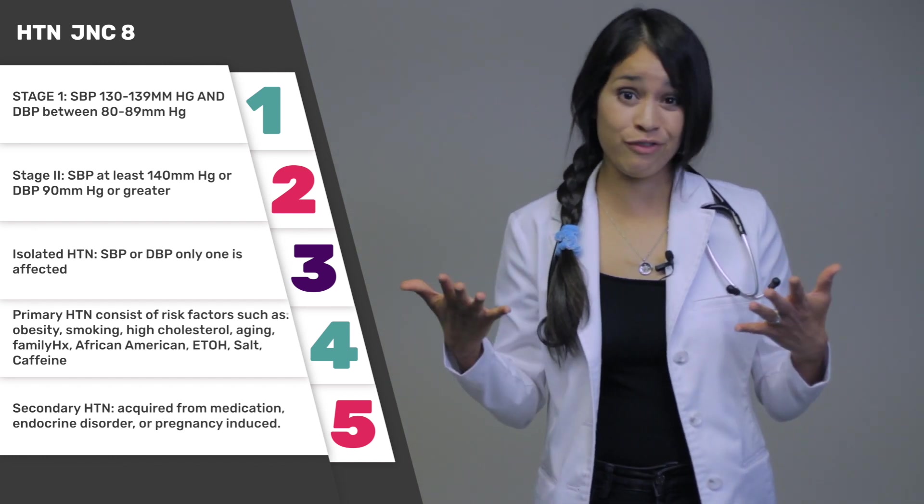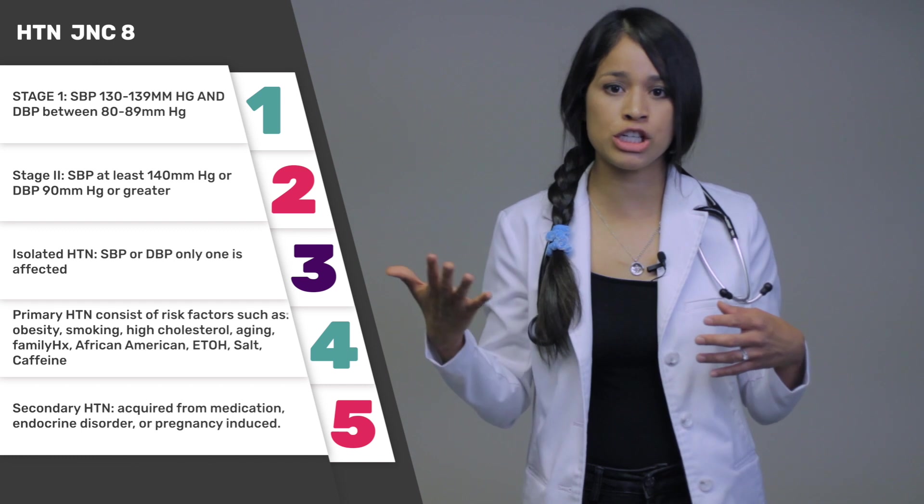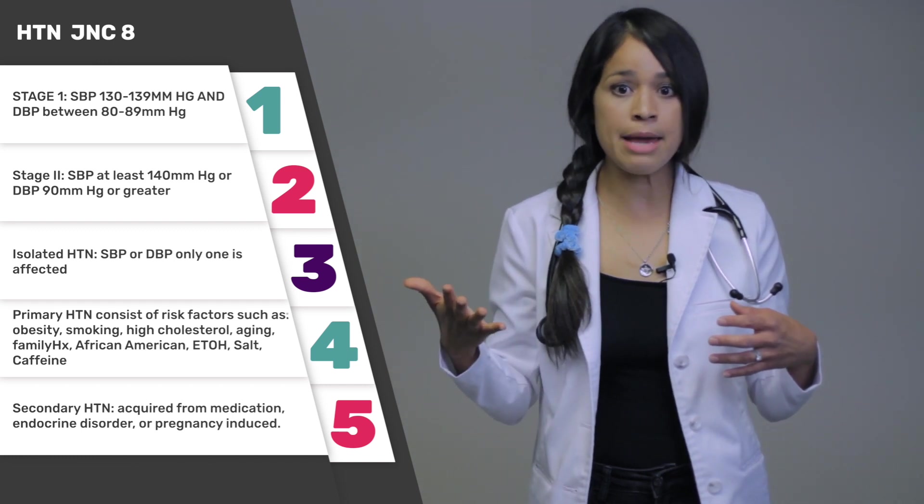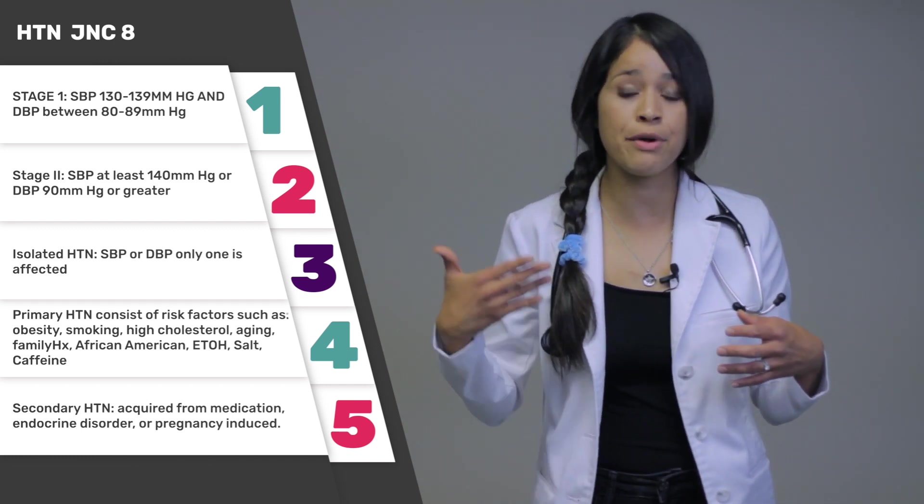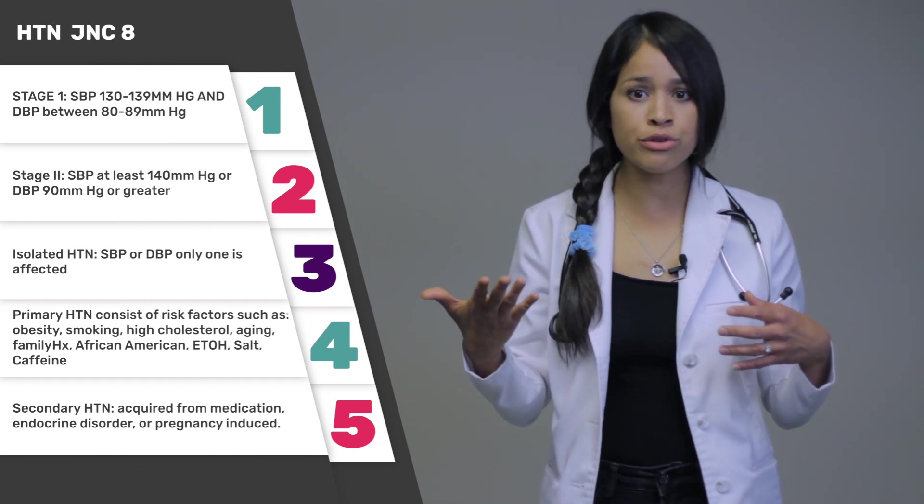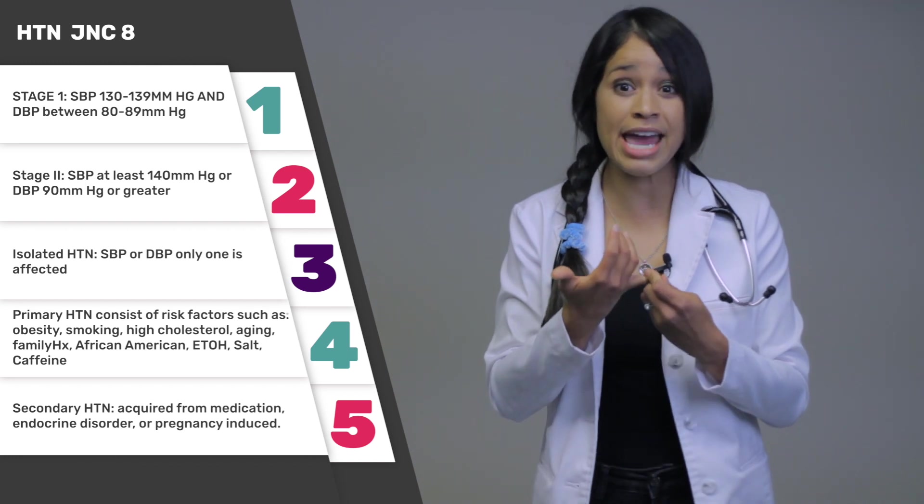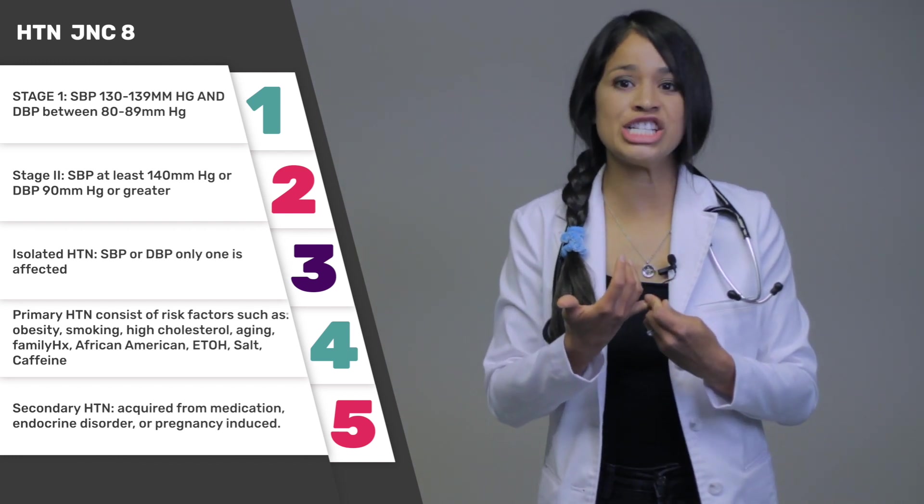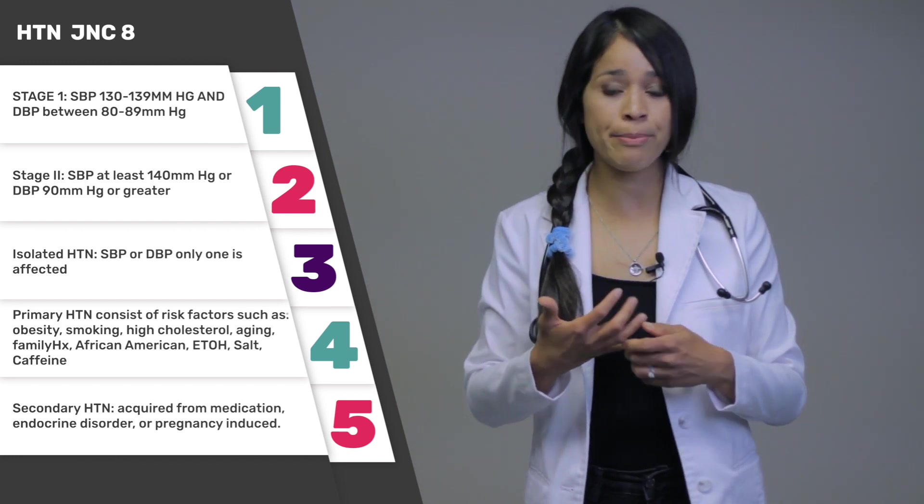So some providers may mention secondary hypertension. It means the high blood pressure was acquired from medications such as estrogen or illicit drug use, or it could possibly be an endocrine disorder such as hyperthyroidism or possibly pregnancy induced, just to mention a few.